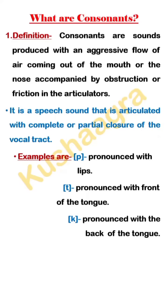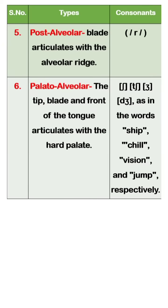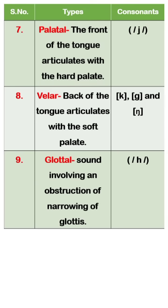Consonants are letters that represent certain special speech sounds that involve blocking the air before it leaves the mouth. Consonants can be classified into following categories based on certain features, like on the place or point of articulation. On this basis, where in the vocal apparatus a sound is produced, consonants can be classified into these nine categories.